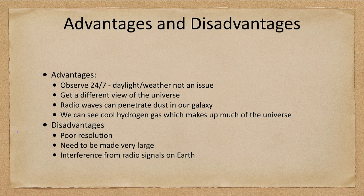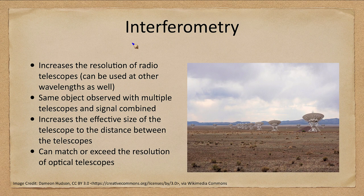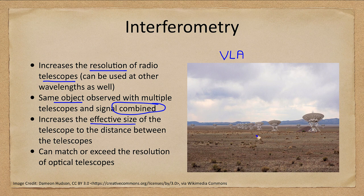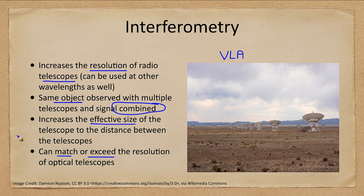So how can we get around some of this? We can use what is called interferometry, which increases the resolution of radio telescopes. Instead of using just one telescope or making an extremely large one, you observe the same object with multiple telescopes and combine the signals. This increases the effective size to the distance between them. Here we're looking at the Very Large Array, or VLA, in the desert of New Mexico — a set of 27 telescopes spread out so that multiple telescopes give you the effective resolution of the greatest distance between any two, matching or exceeding optical telescope resolution.